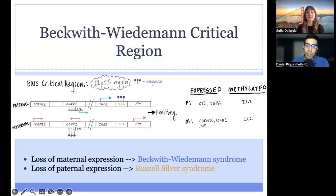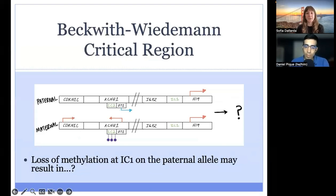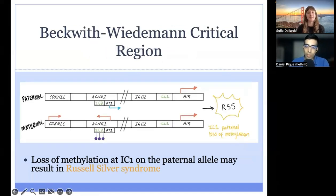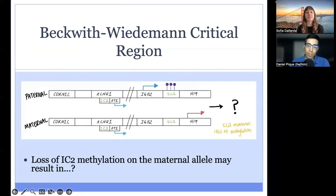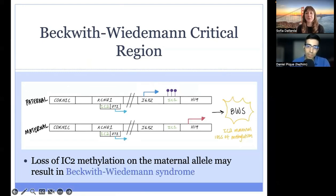Here we have one example of a genetic change that involves loss of methylation at IC1 on the paternal allele. A change affecting the paternal gene expression should result in Russell-Silver syndrome. Loss of methylation at IC1 will lead to loss of expression of IGF-2 from the paternal allele, resulting in Russell-Silver syndrome — and this is actually the most common genetic etiology of Russell-Silver syndrome. A different genetic change involving loss of IC2 methylation on the maternal allele would result in Beckwith-Wiedemann syndrome, as loss of IC2 methylation on the maternal allele leads to loss of gene expression including CDKN1C tumor suppressor. This is the most common genetic etiology of Beckwith-Wiedemann syndrome.